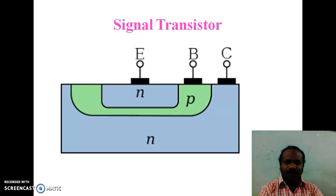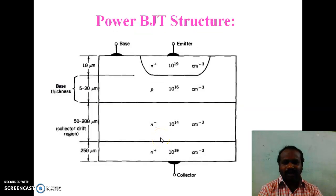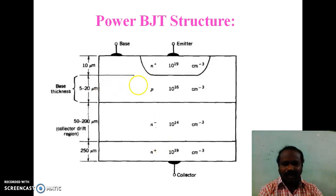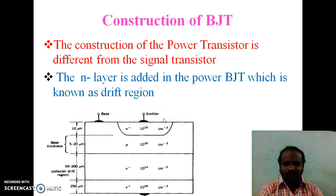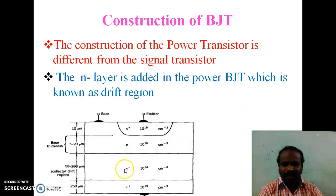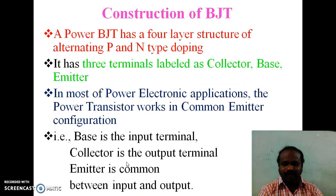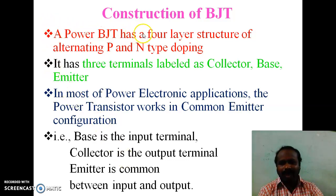This is the cross-sectional view of a signal transistor. The two N regions are heavily doped — that means N plus. This is also N plus. In the structure of Power BJT, the difference between the signal structure and power structure is the addition of an N-minus drift region. The construction of Power Transistor is different from Signal Transistor. The N-minus layer is added in the Power BJT, which is known as the drift region. Including this N-minus drift region, we can say the Power BJT has 4 layers.